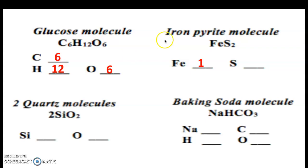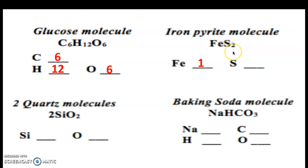Our next example is iron pyrite — fool's gold, or iron sulfide — FeS2. We have one atom of iron because the Fe chemical symbol doesn't have any other number with it, so we know there's just one atom. The subscript two applies to the sulfur, the S right in front of it, so that means we have two atoms of sulfur.